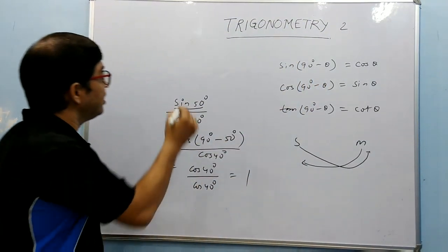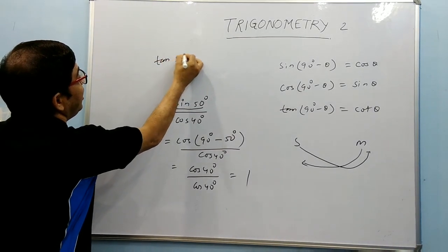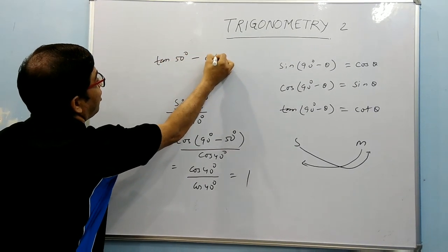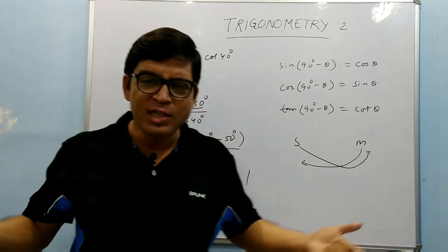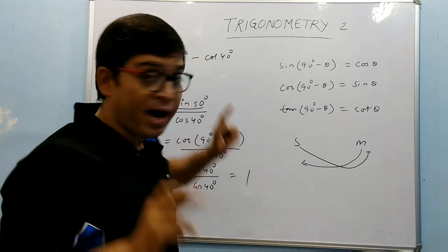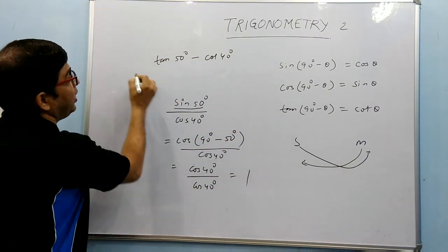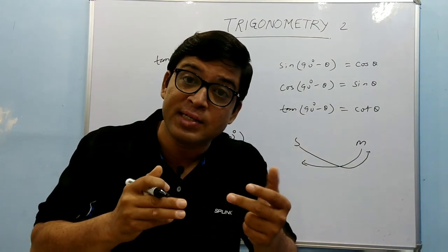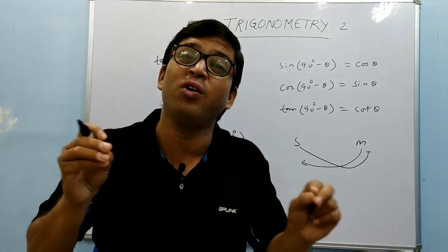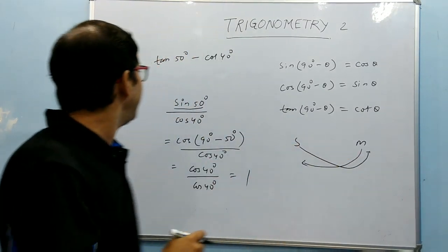One more example. Suppose I have to find tan 50° - cot 40°. What I will do? I just plan to convert this 50 to 40. tan 50°, tan θ can be written as cot(90° - θ). I said just follow in that way, your things will be very easy.